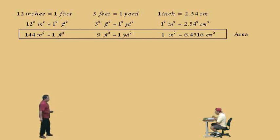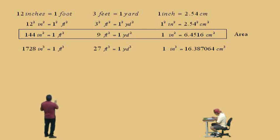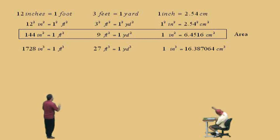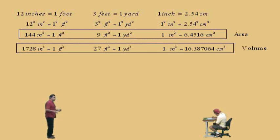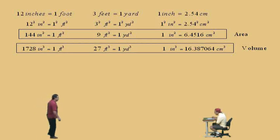Those were for area. Here are the results when we cube both sides: 1,728 inches cubed is equivalent to 1 foot cubed; 27 feet cubed is equal to 1 yard cubed; and 1 inch cubed is equal to 16.387064 centimeters cubed. Those are dimensions for volume. So let's use these and do an area problem.